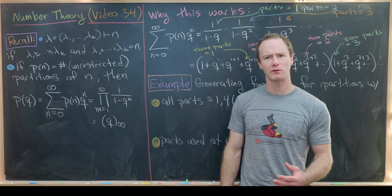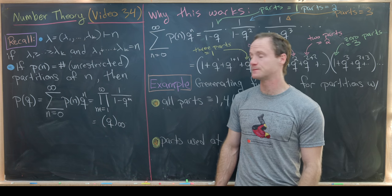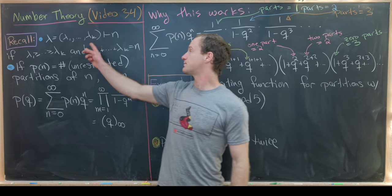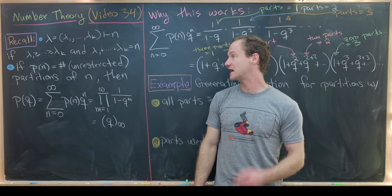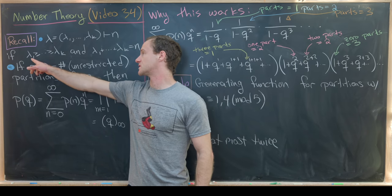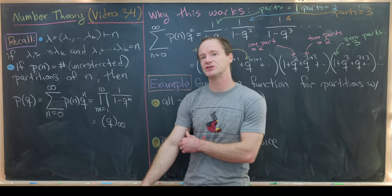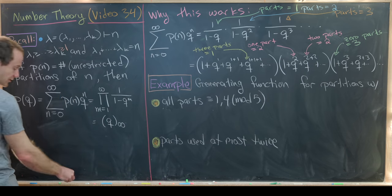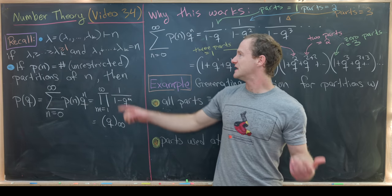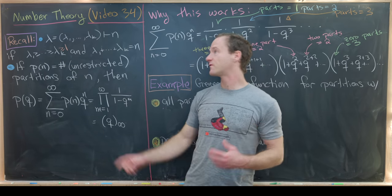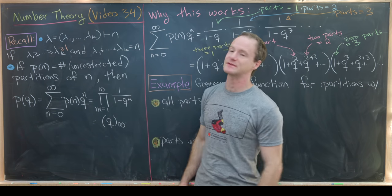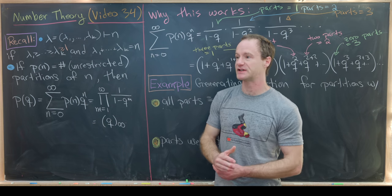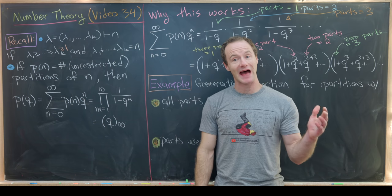Before we get into the major goal of this video, I want to recall a few things and look at some examples. Let's recall that a partition of n, named lambda, is a k-tuple. This partition is said to have k parts if it satisfies two conditions: it is non-increasing — lambda 1 ≥ lambda 2 ≥ ... ≥ lambda k ≥ 1 — and lambda 1 + lambda 2 + ... + lambda k = n. Generating functions are an important tool for studying partitions and coming up with partition identities, as we've seen in previous videos.